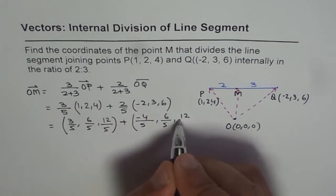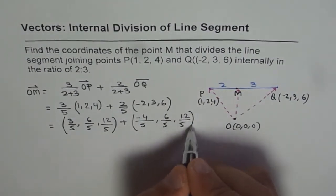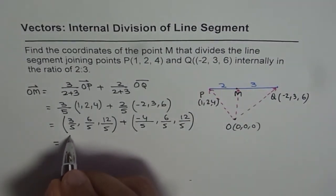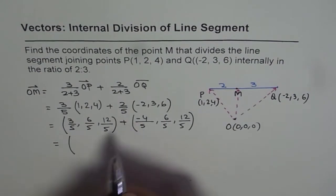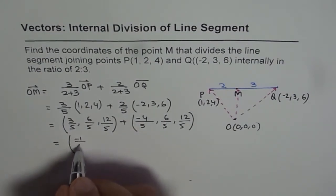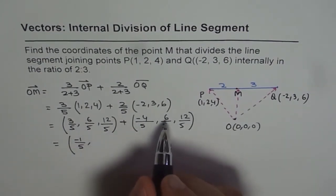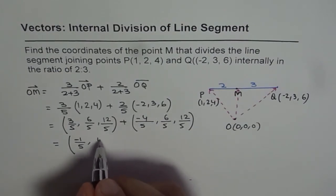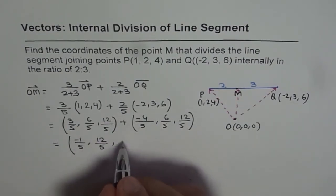When we add them: 3 minus 4 is -1, 6 plus 6 is 12, and 12 plus 12 is 24. So we get (-1/5, 12/5, 24/5).